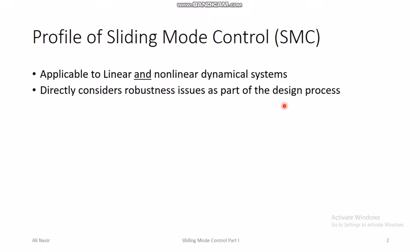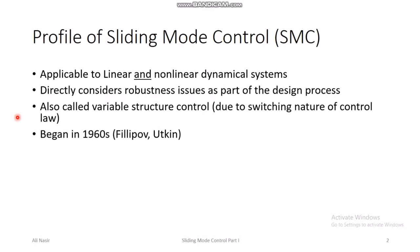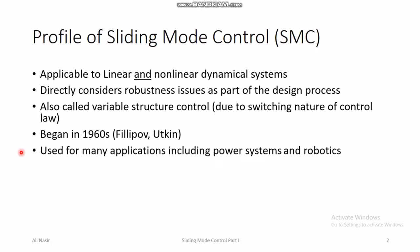Sliding mode control also has other names, such as variable structure control. This name is given because of its switching nature — the control law designed by sliding mode control usually involves switching, which we will see in detail later. Sliding mode control originated in the 1960s, and Filippov and Utkin were mainly responsible for the initial developments. It has since been used in many applications including power systems and robotics.